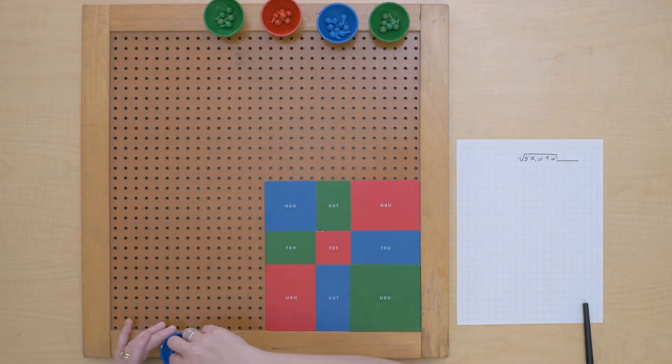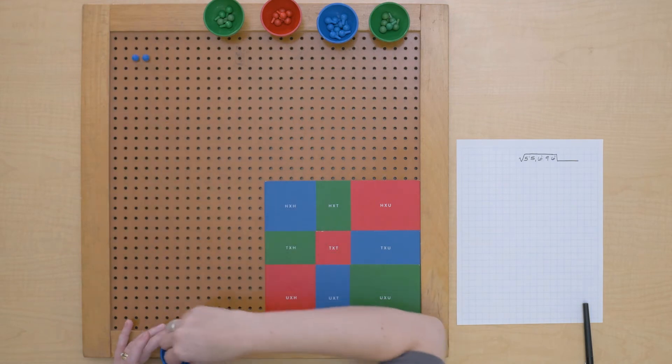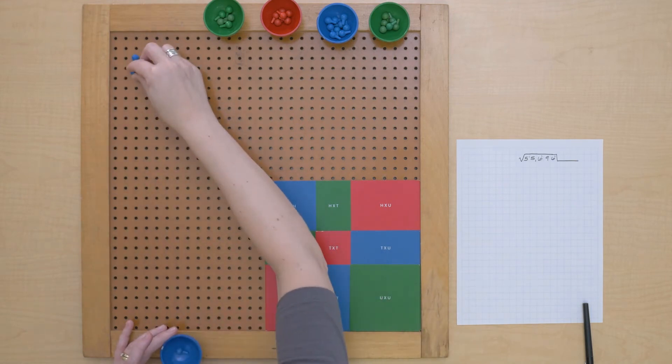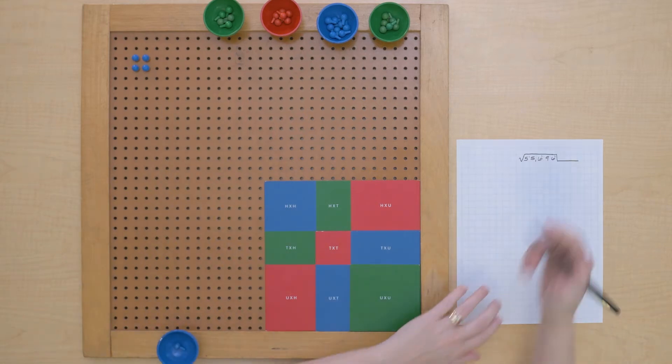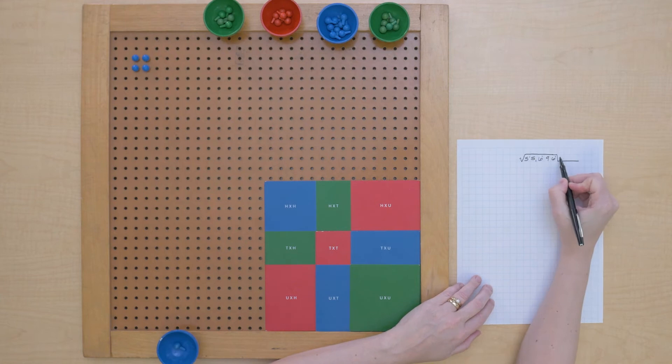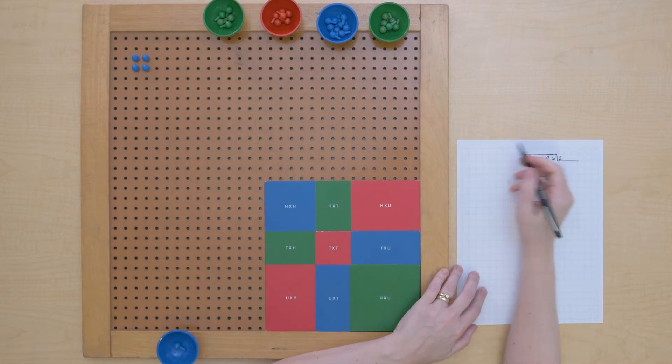We know we need to build the square and we've been able to build a square of two. So we know that our first root digit is going to be two, and we had five of those ten thousands, we used four, we should have one left and we do.